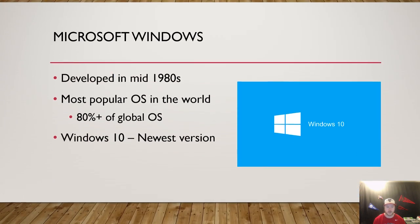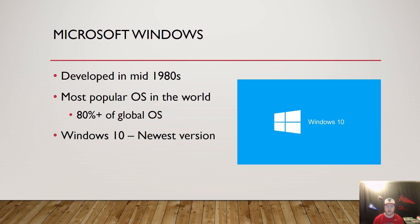The first one is Microsoft Windows. Windows was developed in the 1980s and it's the most popular operating system in the world. It uses pretty much 80% of global operating systems, so all of those computers are running some version of Windows — whether it's Windows 10 or Windows 8. That's an estimate, but by and large most computers are using Windows.